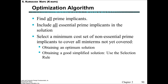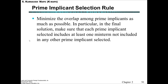In terms of the optimization algorithm: first find all the prime implicants; then include all the essential prime implicants in the solution; then select a minimum-cost set of non-essential prime implicants that will cover all the minterms not yet covered by the essential prime implicants. From that we obtain an optimum solution. To obtain a good simplified solution we use the selection rule: minimize the overlap among the prime implicants as much as possible, and in the final solution each prime implicant selection must include at least one minterm not included in any other prime implicant selection.